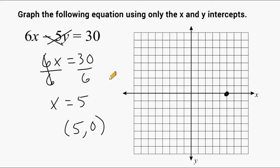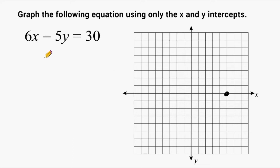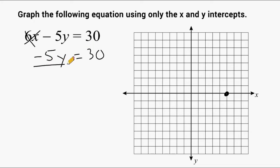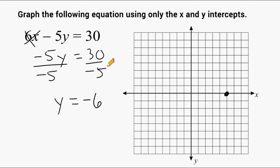Now let's figure out what our y-intercept is going to be. We know that the x-value is zero and 6 times zero is zero, so we can get rid of that term. That leaves us with negative 5y equals 30. We divide negative 5 by itself to make positive 1, and divide 30 by negative 5. Remember, a positive divided by a negative will always give you a negative result. So y equals negative 6. When our x-value is zero, our y-value is negative 6, so we plot (0, negative 6) located 6 below, right here.